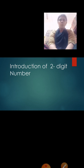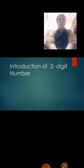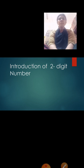You all know 2-digit numbers, correct? Like 18, 29, 97, 92 — they are all 2-digit numbers. 9, 8, 7, 0 — these are all 1-digit numbers. So now you know what 2-digit numbers are.